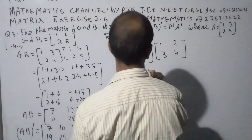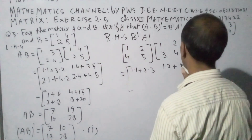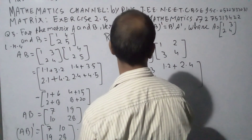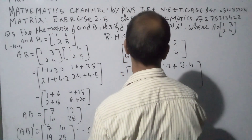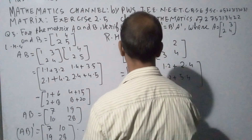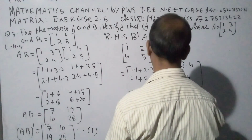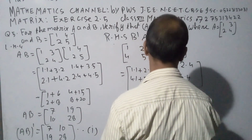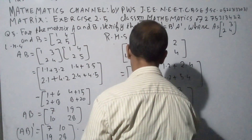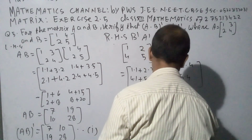Now computing B transpose into A transpose. We have: 1 into 1 plus 2 into 2, 4 into 1 plus 5 into 3, 4 into 2 plus 5 into 4. Results: 1 plus 6 is 7, 2 plus 8 is 10, 4 plus 15 is 19, 8 plus 20 is 28.